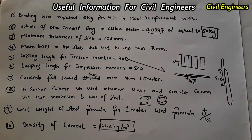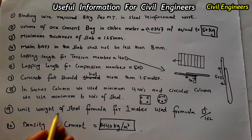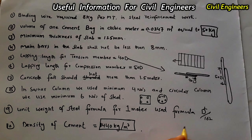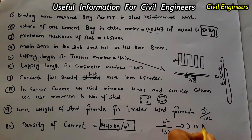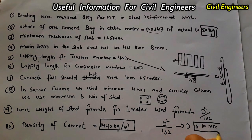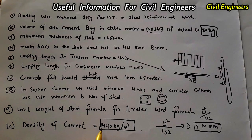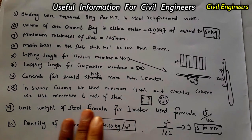The unit weight of steel formula per one meter length is: d² divided by 162, where d is the diameter in millimeters. Additionally, the density of cement is 1440 kg per cubic meter. These are all very important points for civil engineers to keep in mind.